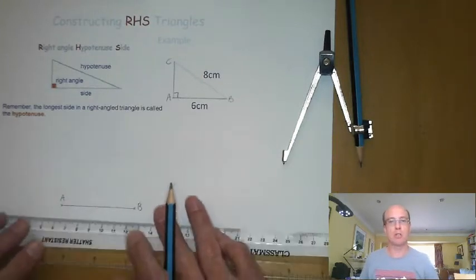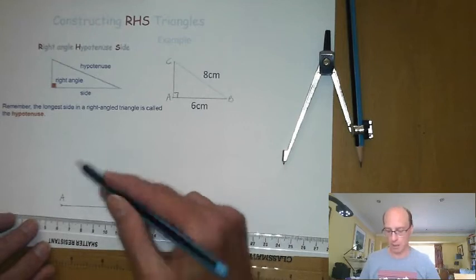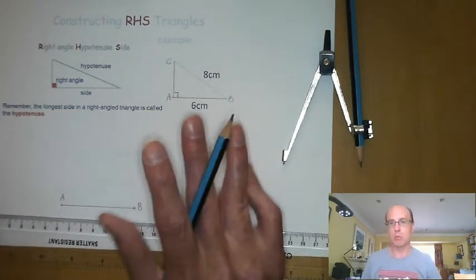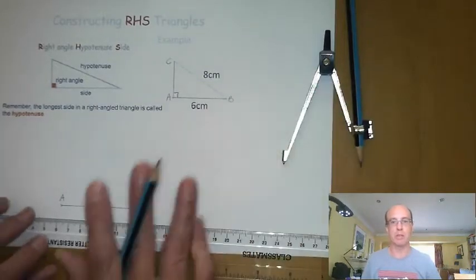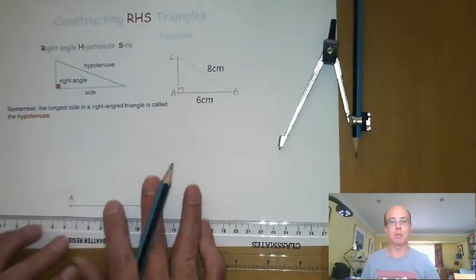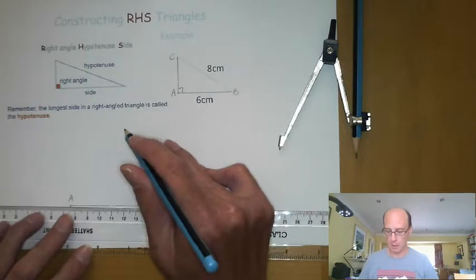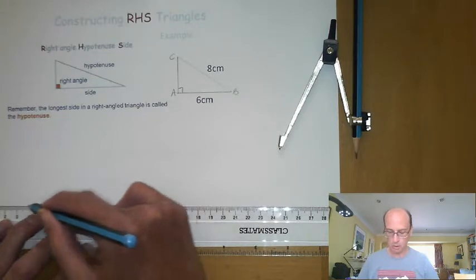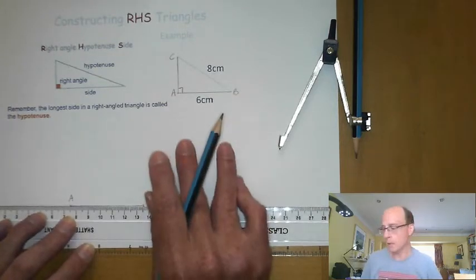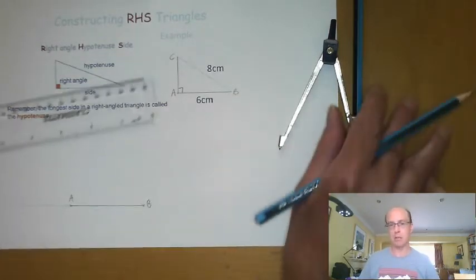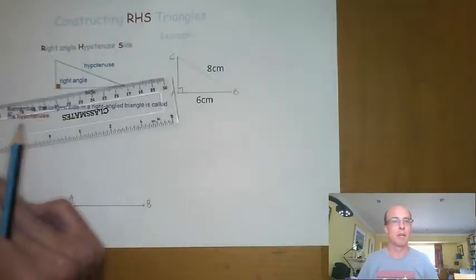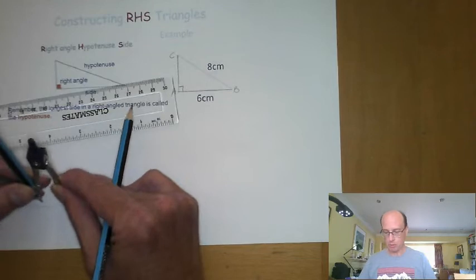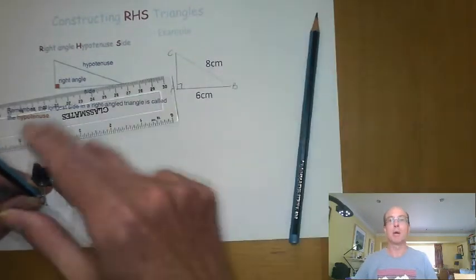I then need to construct a perpendicular line at the point A. So for this construction we've only got our compass and a ruler, we need to be able to construct a perpendicular at the point A. So what I'm going to do, I'm going to extend my line AB to the left.